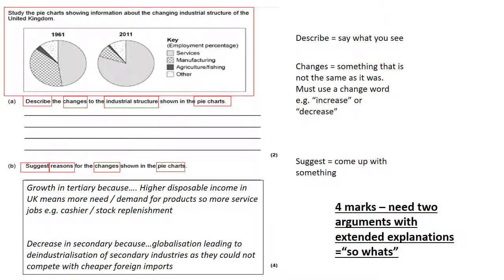What about secondary or manufacturing? Well, there's been a decrease in secondary because of globalisation. That's the idea, remember, that the world is more interconnected now and trade is faster and easier. That leads to de-industrialisation of secondary industries as they could not compete with cheaper foreign imports. Yes, by all means, you could put a specific in there and say, I don't know, Sheffield Steel or the Stoke Ceramic industry. However, the concept here being that secondary has decreased, globalisation getting you one mark and probably de-industrialisation as just a term would probably get you the second mark. But the explanation, they cannot compete with cheaper foreign imports.